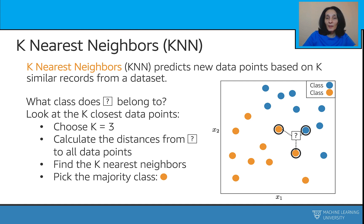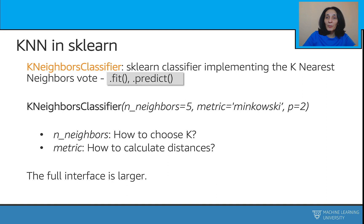The k-nearest neighbor algorithm is very easy to understand and easy to use hands-on. In particular, with the scikit-learn implementation from their neighbors module. Note the key parameters such as the number of neighbors and the distance metric, with the default number of neighbors being 5 and the default metric being the Minkowski metric with p equals 2, which is no other than the Euclidean distance.